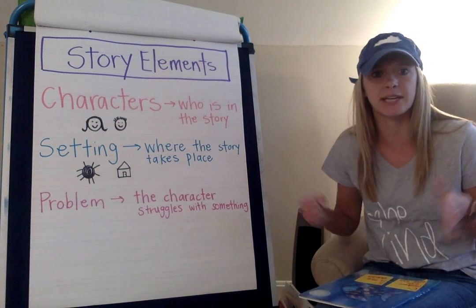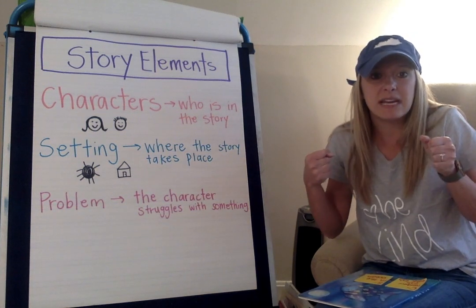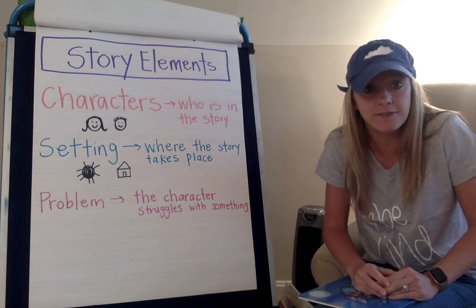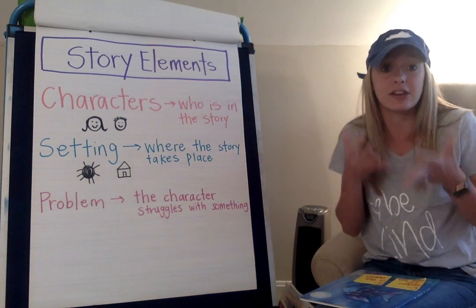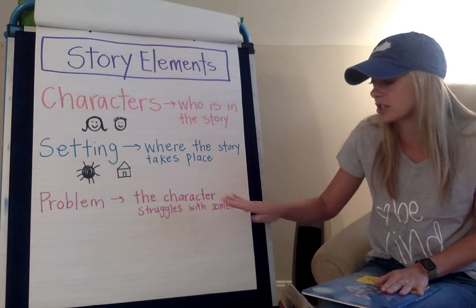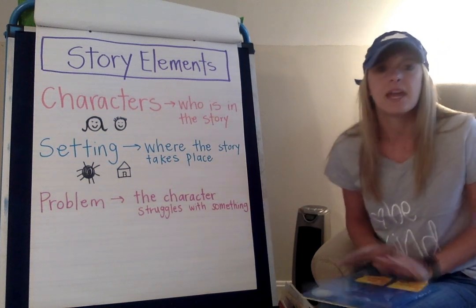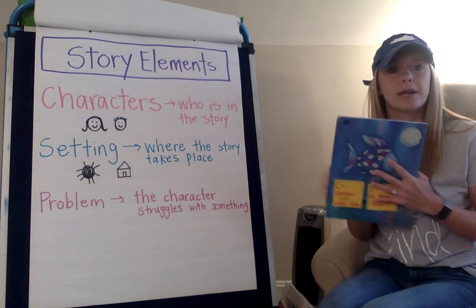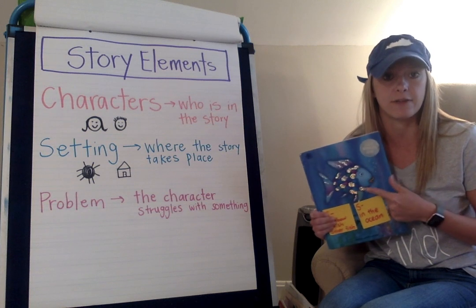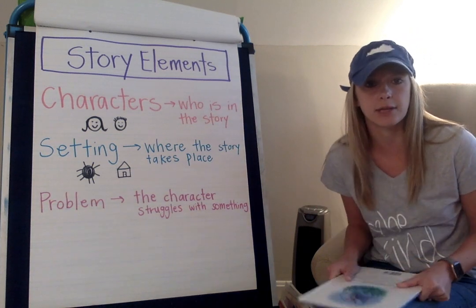Remember when we do our chant, we go like this — problem. That's because there's an obstacle or a challenge in every fiction book that the character goes through. So the problem is the character struggles with something. If I think about Rainbow Fish and the main character Rainbow Fish in this book, what is Rainbow Fish struggling with?